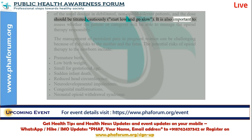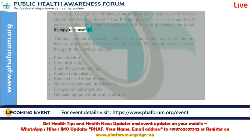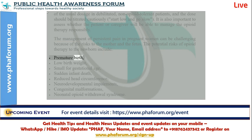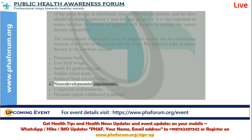It is also important to assess whether the patient or caregiver will be able to manage the opioid therapy responsibly. The management of persistent pain in pregnant women can be challenging because of the risks to the mother and the fetus. The potential risks of opioid therapy to the newborn include premature birth, low birth weight, small for gestational age, sudden infant death, reduced head circumference, neurodevelopmental impairments, congenital malformations, and neonatal opioid withdrawal syndrome.